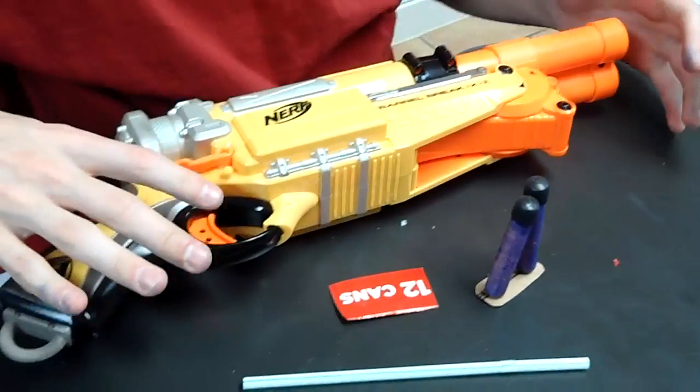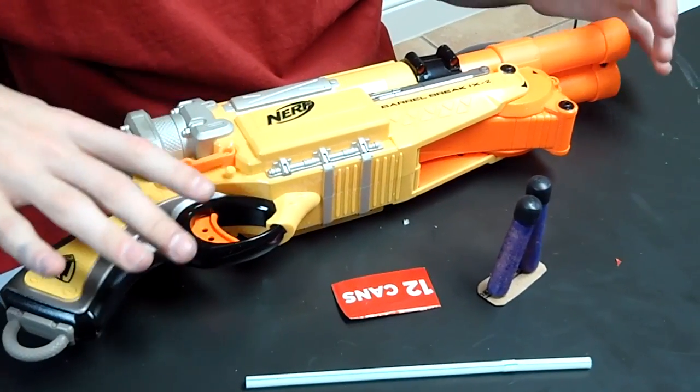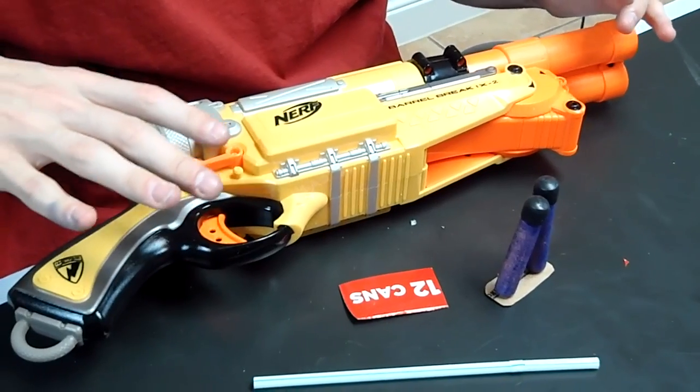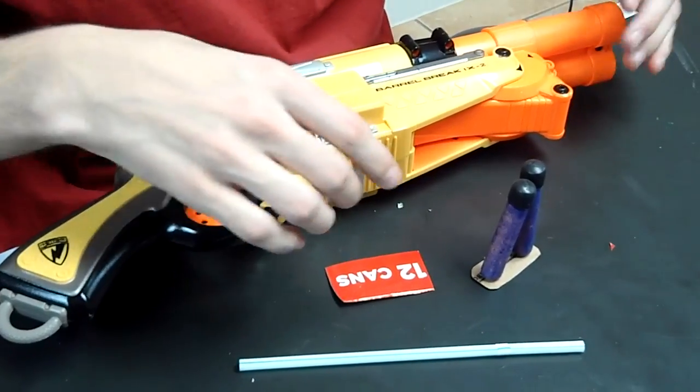I haven't done my ultimate barrel break mod guide yet, but in this one I'm going to show you a cool trick that I figured out, which is how to make a speed loader for the barrel break.